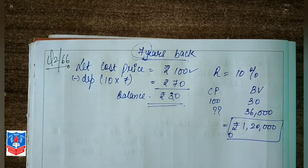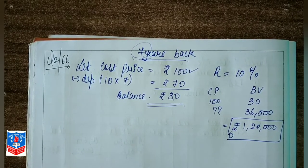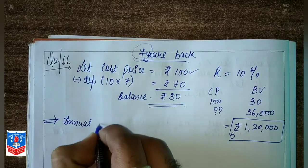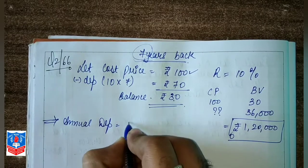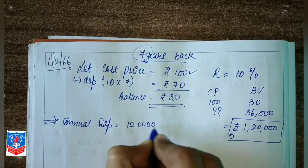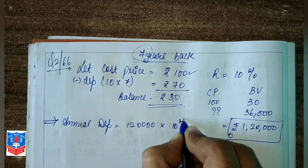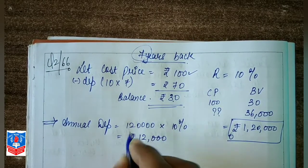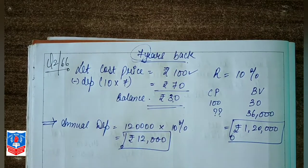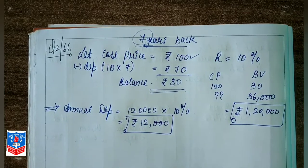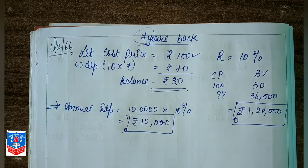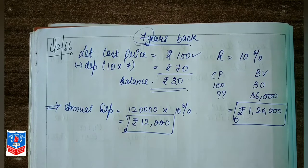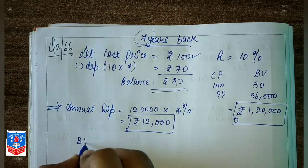Now we need to find the annual depreciation. Annual depreciation = 1,20,000 into 10% = rupees 12,000. So every year we need to deduct 12,000 as depreciation.